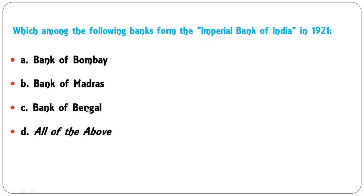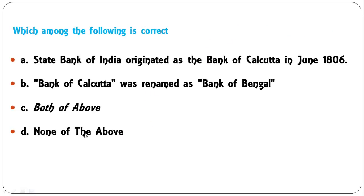Which among the following banks formed the Imperial Bank of India in 1921? The Imperial Bank was created out of three presidency banks — Bank of Bombay, Bank of Madras, and Bank of Bengal. So 'all of the above' is the correct answer. These three were merged in 1921 to form the Imperial Bank of India.